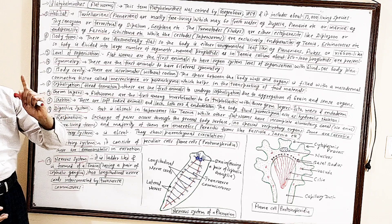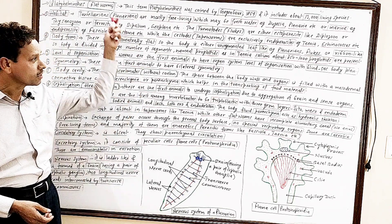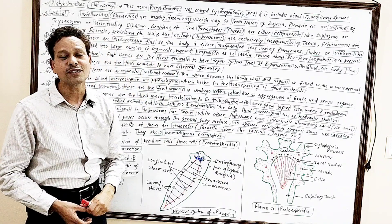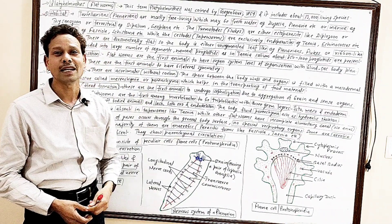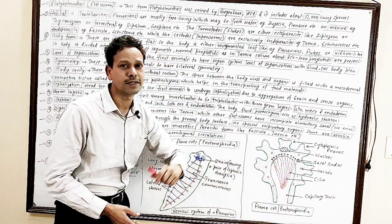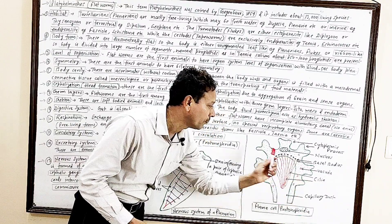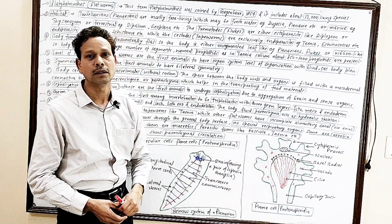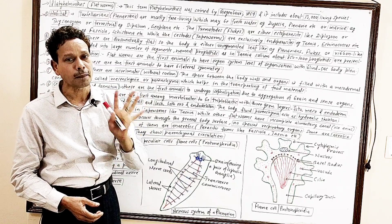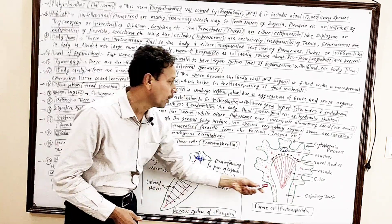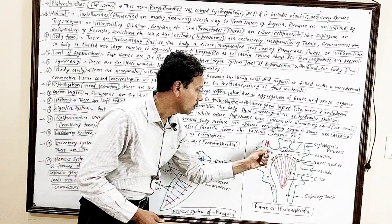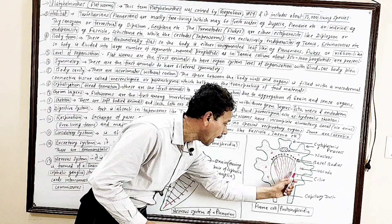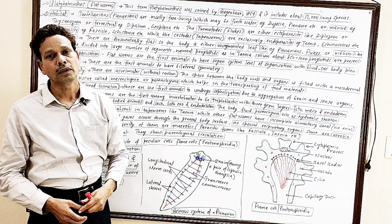Excretory system: in platyhelminthes, special excretory organs called flame cells are present. These are named protonephridia. Each flame cell consists of a bundle of cilia that gives the appearance of a flame, hence the name. On the outer surface there are numerous cytoplasmic processes. Each cell consists of a nucleus, and in the lumen cavity this bundle of cilia produces the flame-like appearance.